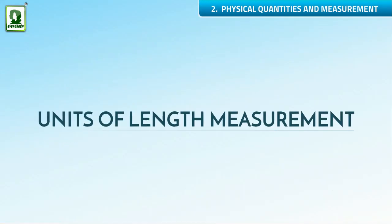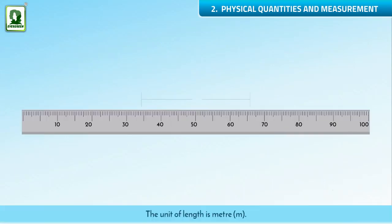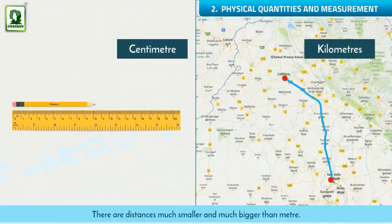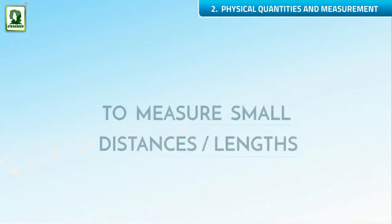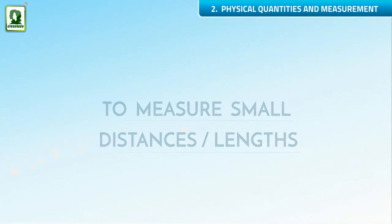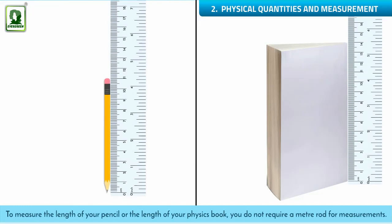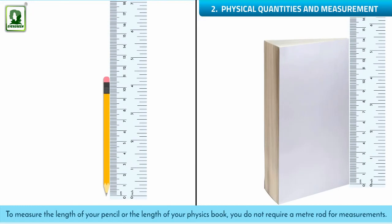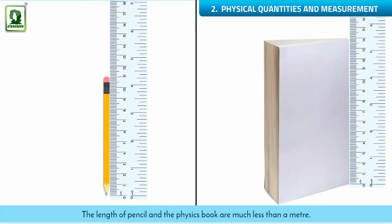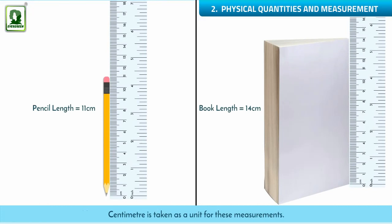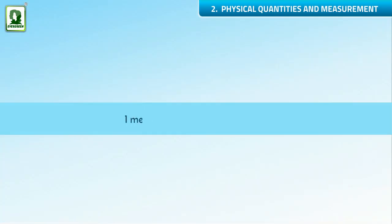Unit of length measurement. The unit of length is meter (m). There are distances much smaller and much bigger than a meter. Thus, smaller and bigger units are also used to measure small distances or lengths. To measure the length of your pencil or the length of your physics book, you do not require a meter rod. It is therefore convenient to express these lengths in smaller units, and centimeter is taken as a unit for these measurements. 1 meter (m) is equal to 100 centimeters (cm).